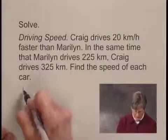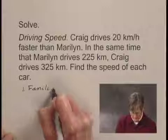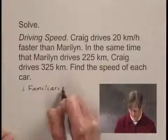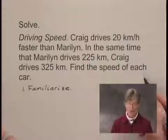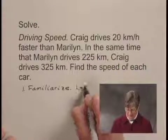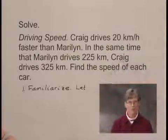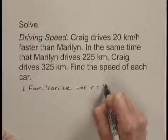Let's begin by familiarizing ourselves with the problem. We need to assign some variable names to the speeds that we're looking for, and since Craig's speed is described in terms of Marilyn's speed, let's let R be Marilyn's speed.